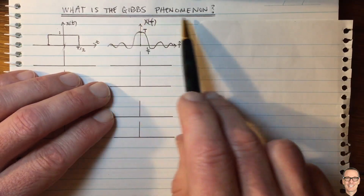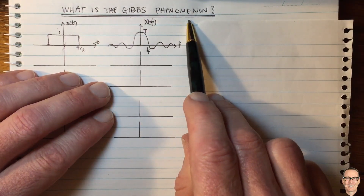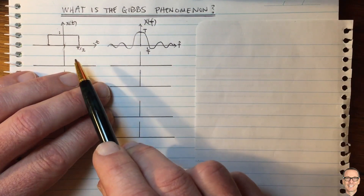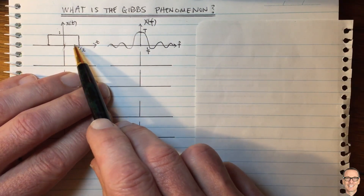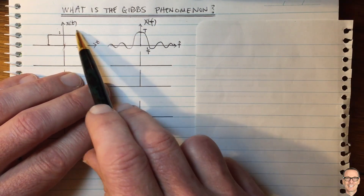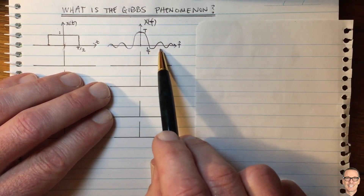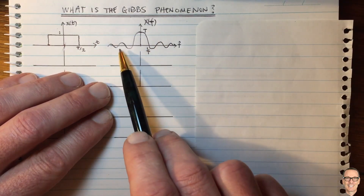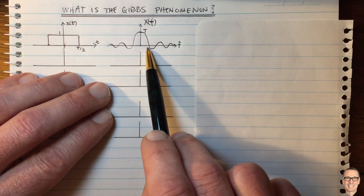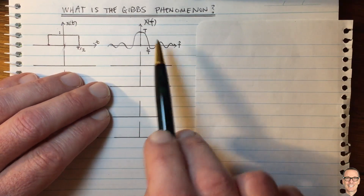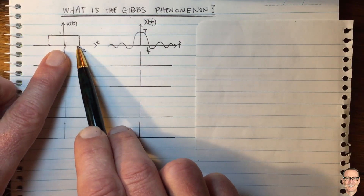So what is the Gibbs phenomenon? It's best explained by looking at an example of the square pulse shape in the time domain, which has a Fourier transform of a sinc function. The Fourier transform shows us all of the frequency components that add together to make up our time domain signal.